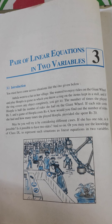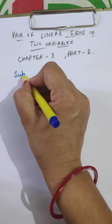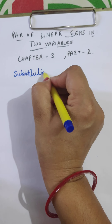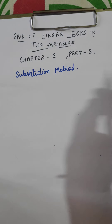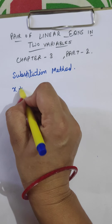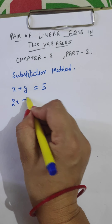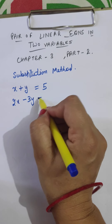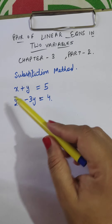Today we are going to discuss the second method to solve these equations, and that is the substitution method. For this method, let us take an example: x plus y equals 5 — this is the first equation — and 2x minus 3y equals 4 — this is the second equation. This is a pair of linear equations in two variables.